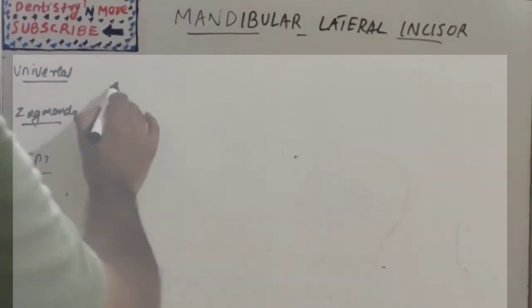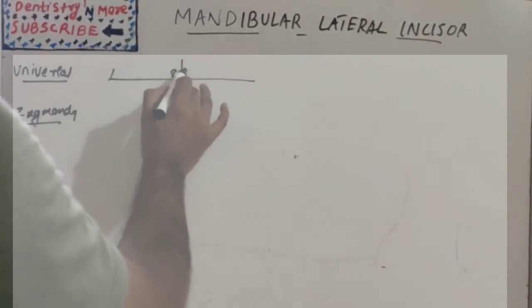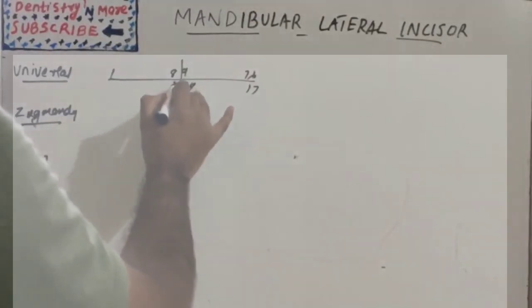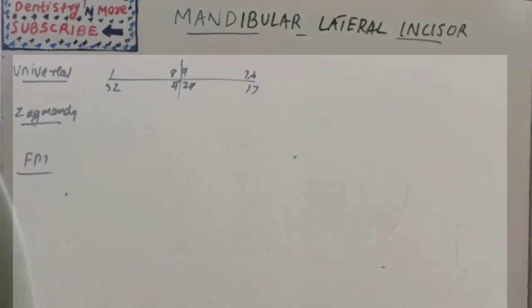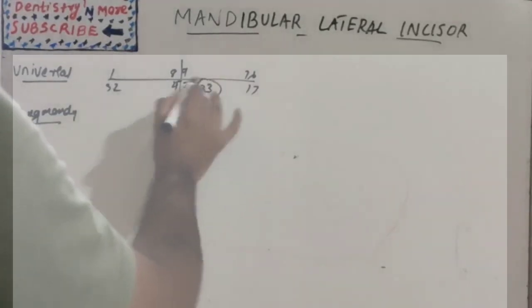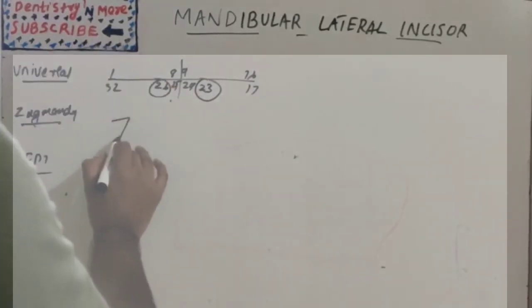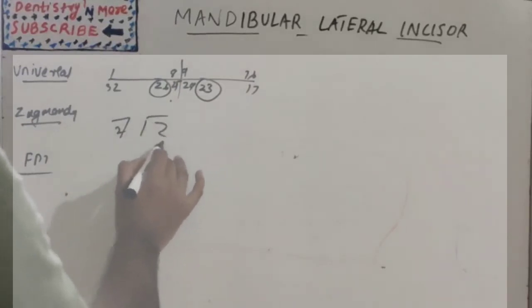The tooth numbering: the universal system, 1-8, 9-16, 17-24, 25-32. So it will be 23 and 26. The sigmoidic system is 2 and 2. FDA system is 3-2 and 4-2.